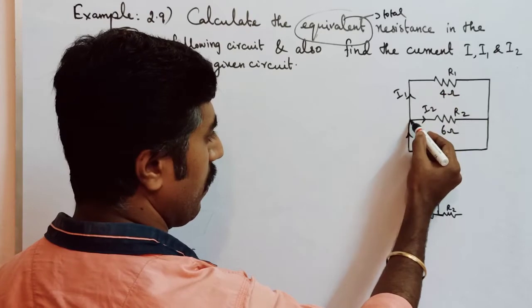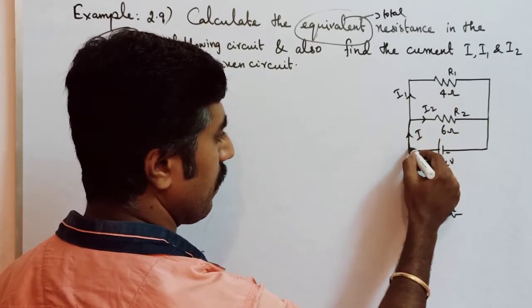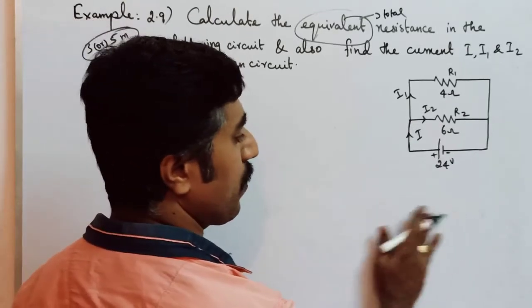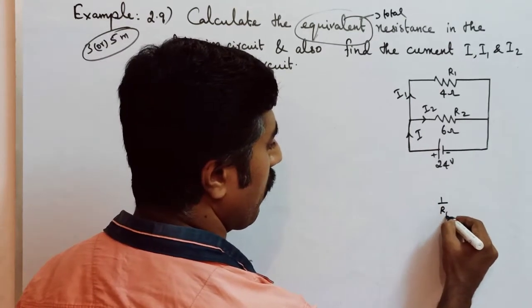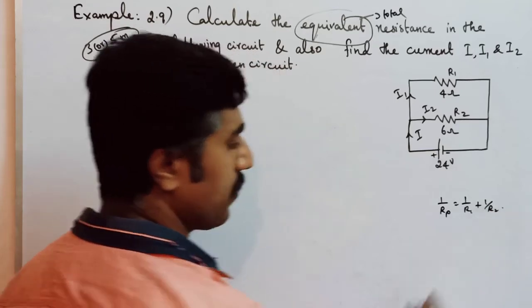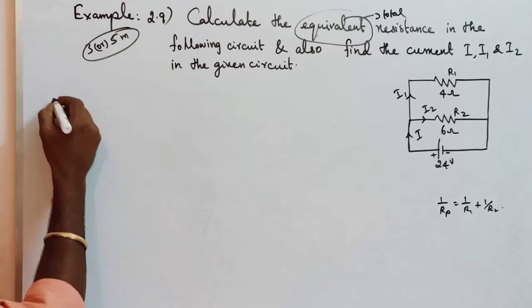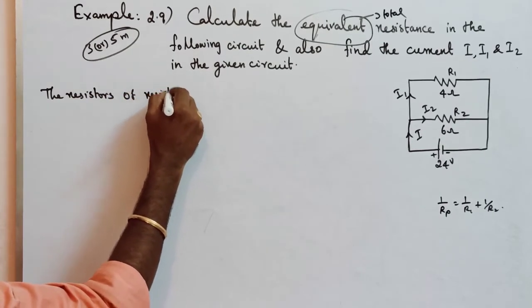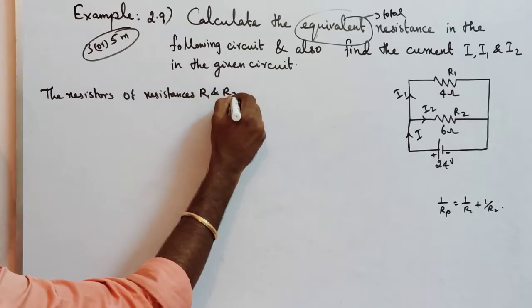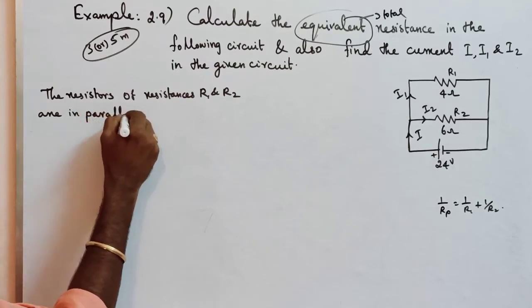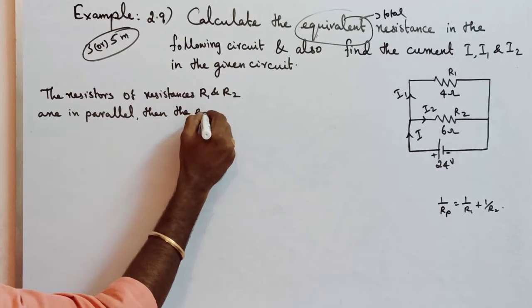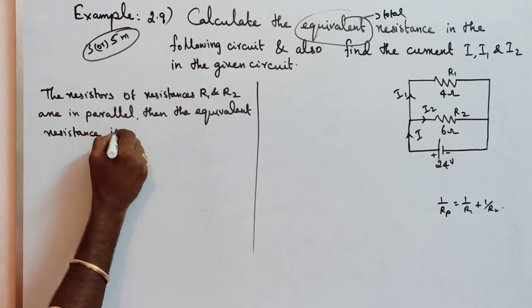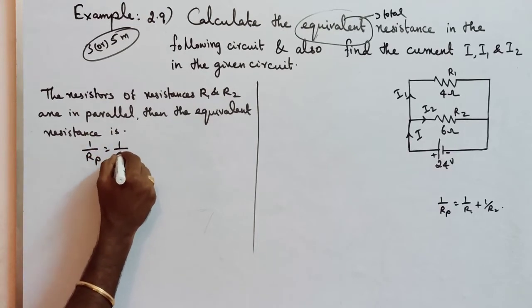That is parallel. Resistor R1 and R2 with three junctions - one, two, three with battery. Now three meeting points, three junctions are there, so it is parallel. Resistors at the same time are parallel. What is the formula? Resistors in parallel formula: 1 by RP is equal to 1 by R1 plus 1 by R2. The resistors of resistances R1 and R2 are in parallel, then the effective or equivalent or total resistance formula is 1 by RP equals 1 by R1 plus 1 by R2.